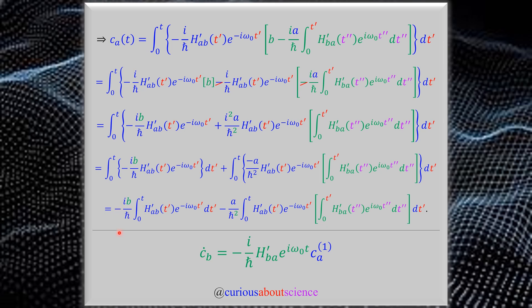Bringing negative i/h-bar and B outside, and then negative A over h-bar squared — note that i-squared goes to negative one, producing a minus sign. Keeping track of the matrix elements: we have AB at negative omega-naught, then AB at negative omega-naught, and BA at positive i omega-naught. At this point, we're done up to second order with all the equations needed for CA. Now we can do the same thing but focus on the CB term.